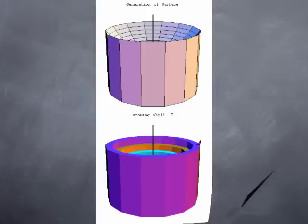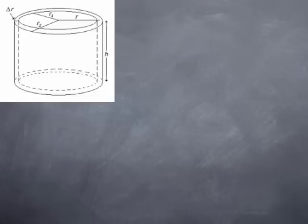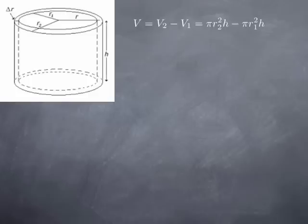The building blocks for approximating volume are cylindrical shells — two concentric cylinders where the inner one is hollow, like the sheathing of an electrical wire. To find a convenient formula for the volume of such a shell: the volume is the difference between the volume of the outer cylinder and the inner cylinder. If the outer cylinder has radius r₂ and the inner has radius r₁, with common height h, then the volume is π·r₂²·h minus π·r₁²·h.